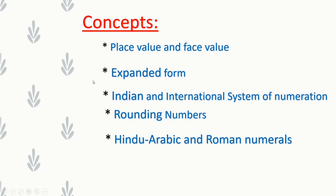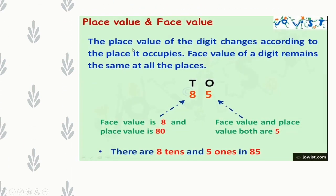Let us see Place Value and Face Value. The place value of a digit changes according to the place it occupies. Whereas the face value of a digit will never change — it will be the same in whatever place it may be. But the place value of a digit depends on the place where it is.